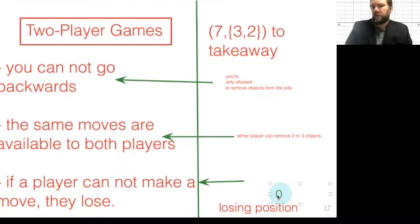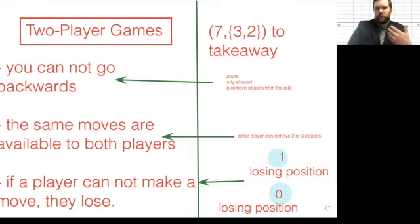Besides zero, there's another losing position. So one is also a losing position because you can't make a move from one. Your only options are to take three or two.